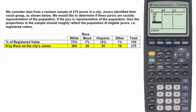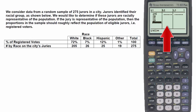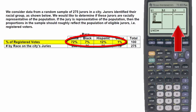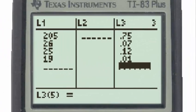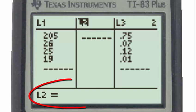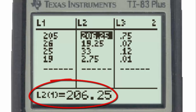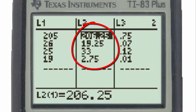On the TI-83, the first step is to put the observed frequencies for the different racial groups into list 1. List 2 will contain the expected numbers from the total of 275 jurors, assuming jury selection follows the racial makeup of the city. To do this, put the percentages as decimals into list 3, then set list 2 equal to 275 times list 3, giving the expected numbers if jury selection is representative of the population.